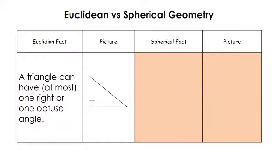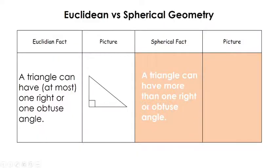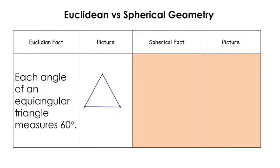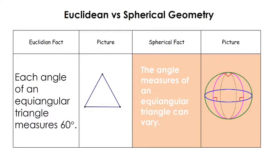Some consequences of this: in Euclidean geometry, a triangle can have at most one right or one obtuse angle. But in spherical geometry, you can have more than one right or more than one obtuse angle. In fact, you can have as many as three right angles or even three obtuse angles in a spherical triangle — as that visualization just showed us.